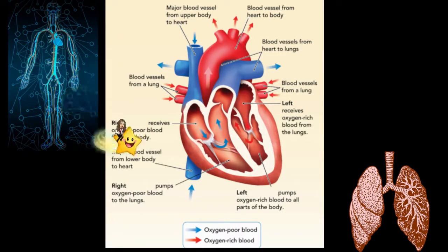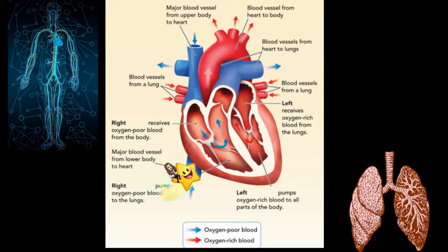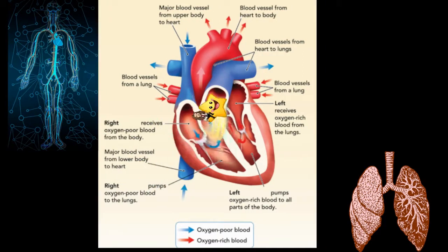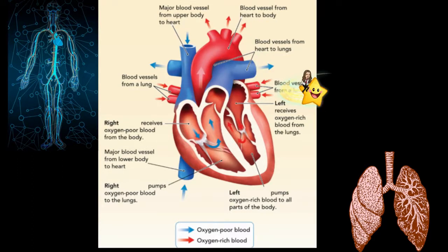The blood returns through the right atrium, it goes down to the right ventricle, and out to the lungs where gas is exchanged. Then it starts the process all over again.